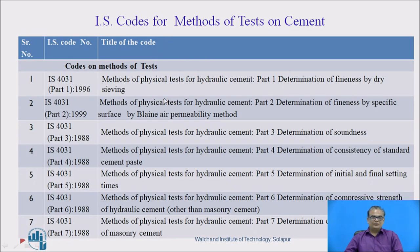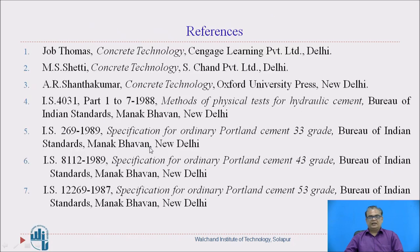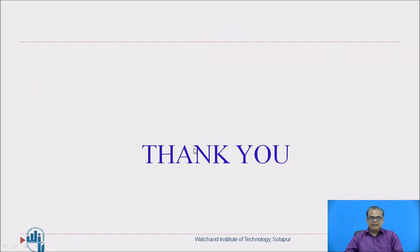These are the IS codes which are generally referred to for methods of tests on cement. These are the IS codes for specifications on cement, including IS 269. Please go through these references. Thank you.